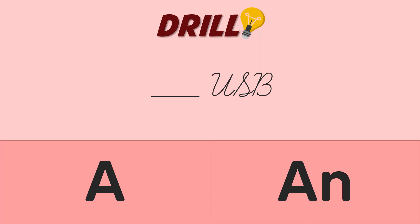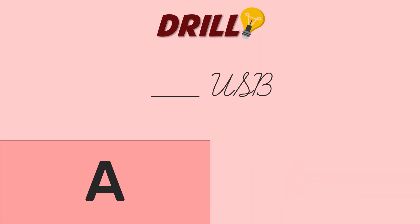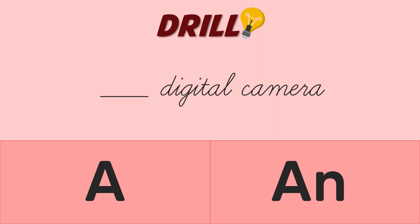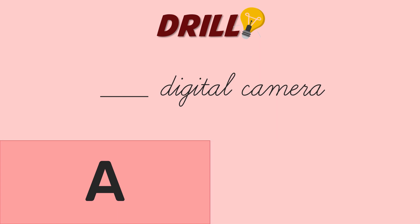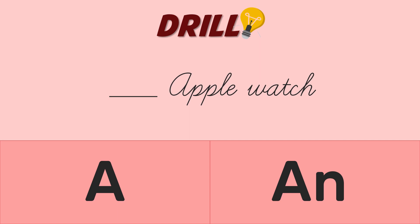Next: blank USB. If you answered AN, you are wrong. The answer is A USB. The word USB begins with the vowel letter U, but when you hear the word USB, the initial sound is actually a consonant Y sound. So we use the article A. Next: blank digital camera. If you answered A, you are correct. Digital begins with the consonant sound D, that's why we use A. Finally, our last item: blank Apple Watch. If you answered AN, you are correct. Apple begins with the vowel sound A. Hence, we use the indefinite article AN — an Apple Watch.